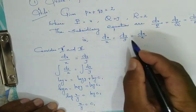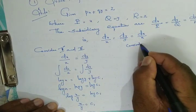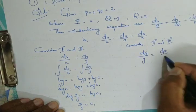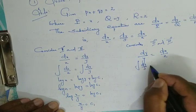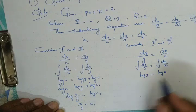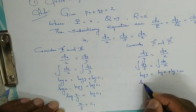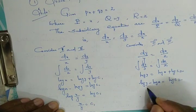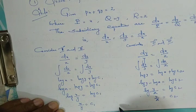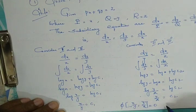Similarly, we consider the second and third fractions: dy/y = dz/z. Integrating both sides, log y = log z + log c₂. Using the log rule, log y minus log z = log c₂, giving log(y/z) = log c₂, so y/z = c₂. The required solution of the PDE is written as φ(x/y, y/z) = 0.